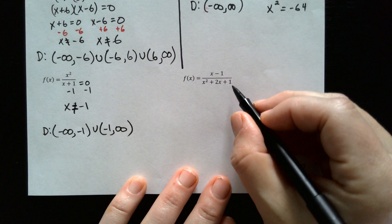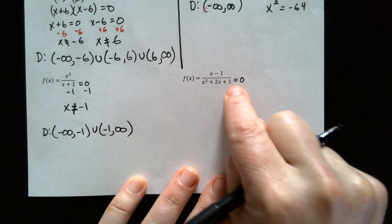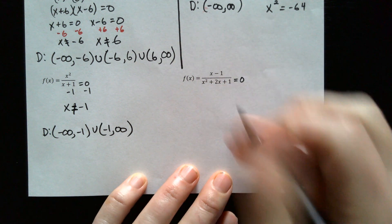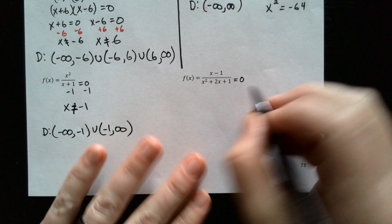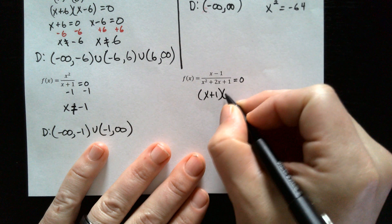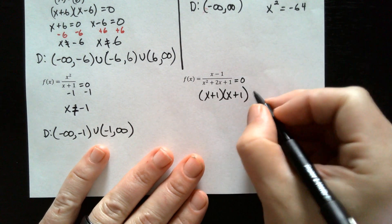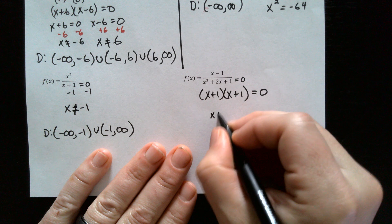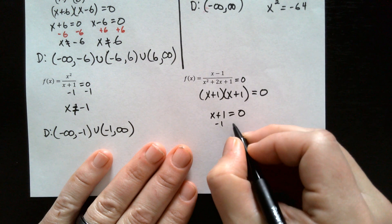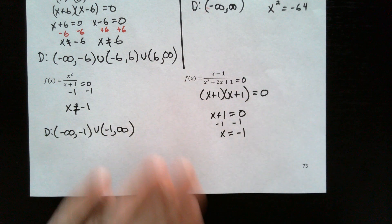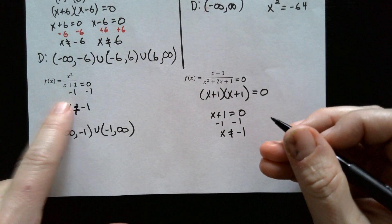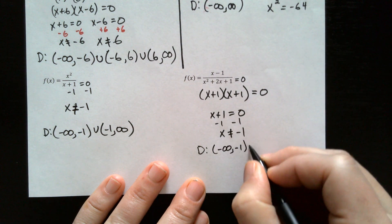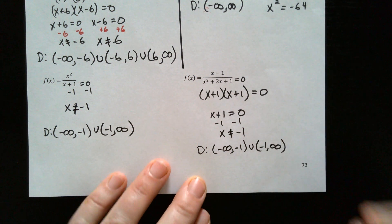One more. We need two numbers that multiply to get 1 and add to get 2 — that's 1 and 1. So it factors as (x plus 1)(x plus 1) equals zero. We only need to solve one: x plus 1 equals zero. Subtracting 1 from both sides gives x equals negative 1. This is the exact same answer as the last one. So the domain is negative infinity to negative 1, union, negative 1 to infinity. And that is it.